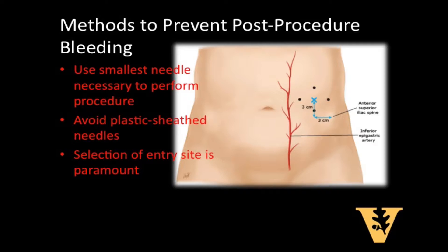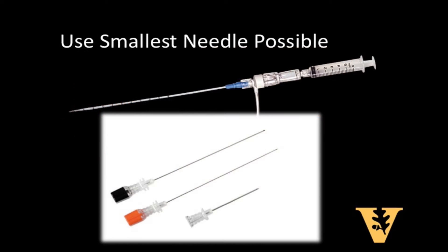To help avoid bleeding complications, use the smallest needle that is necessary to perform the procedure. The choice of needle depends upon whether a diagnostic or therapeutic paracentesis is planned. A diagnostic paracentesis can be performed in a lean patient with a 1 or 1.5 inch 22-gauge needle, while a 3.5 inch 22-gauge spinal needle can be used for diagnostic paracentesis in an obese patient. For a therapeutic paracentesis, a larger 15 or 16 gauge (6 to 8 French) needle is used to speed the removal of ascitic fluid.